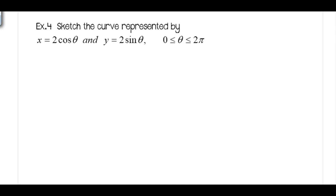Sketch the curve represented by this set of parametric equations. What I'm going to do here is rearrange these. I'm going to solve this for cosine so that I get cosine theta equals X over 2, and I'm going to rearrange this one so that I get sine theta equals Y over 2. We'll get back to those in a minute.